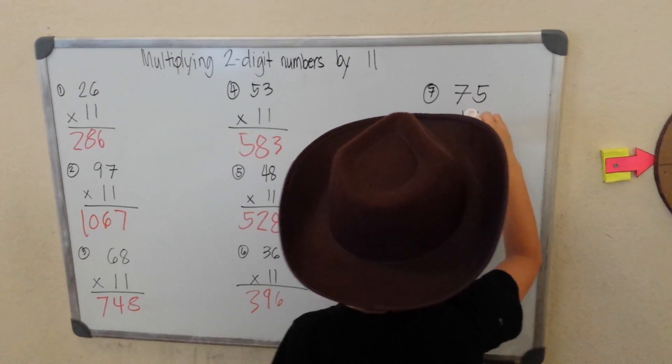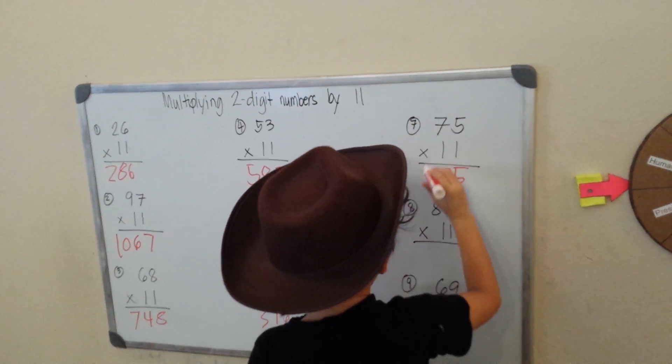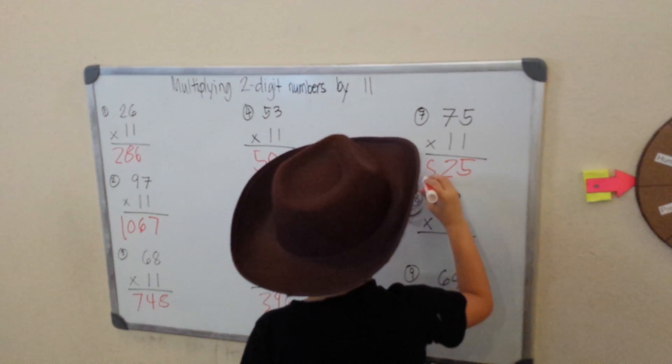75 times 11. Copy the 5. 7 plus 5, 12. Carry 1, 1 plus 7. 8. 825.